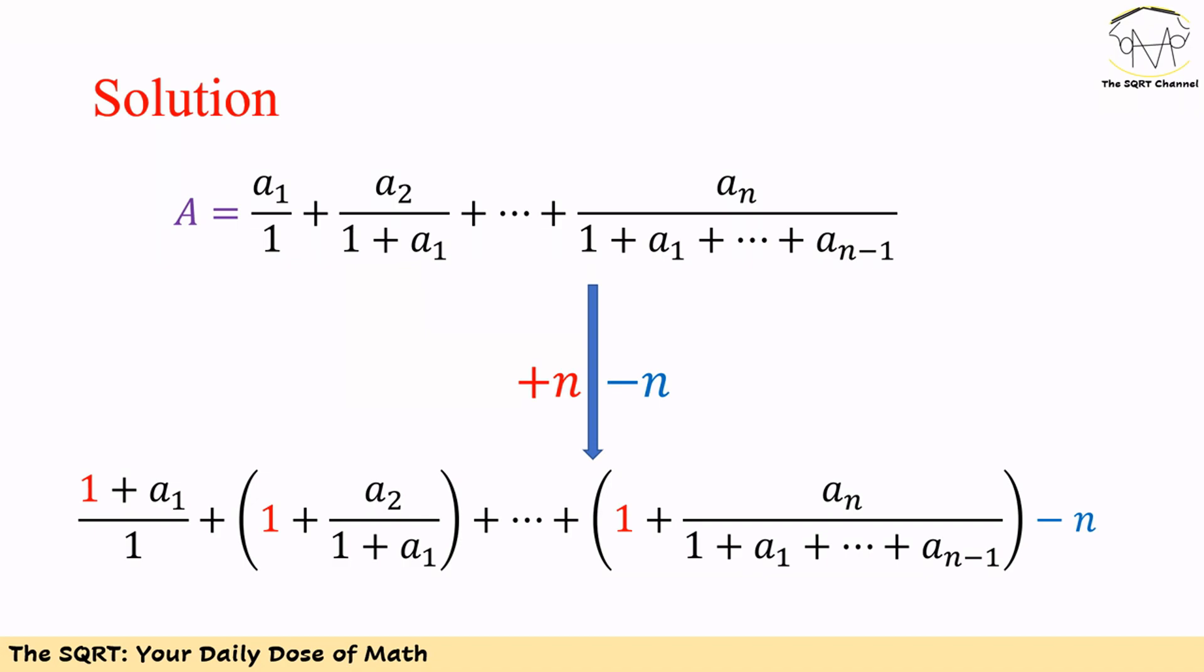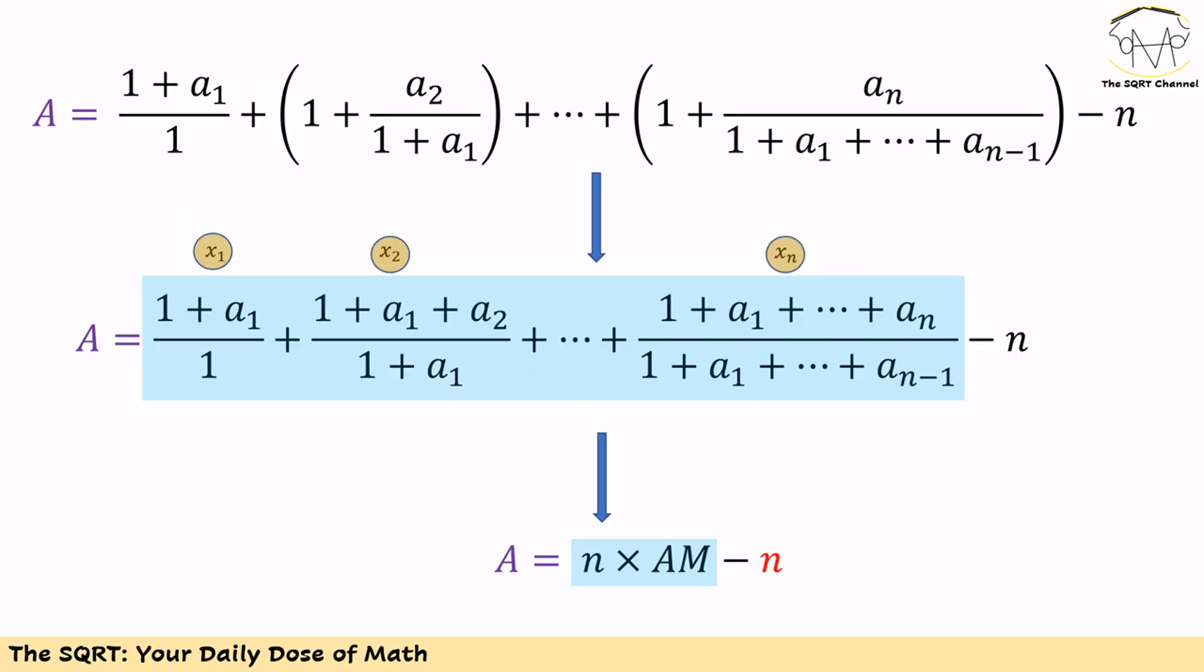Now let's talk about the solution. To solve this problem with AM-GM inequality, we are going to add n and then remove n from the expression. Instead of adding n, we divide n into n terms, each one is 1. Then we have 1 plus a1 over 1 instead of just a1, and 1 plus a2 over 1 plus a1 instead of just a2 over 1 plus a1, and so on. At the end we remove n from the expression.